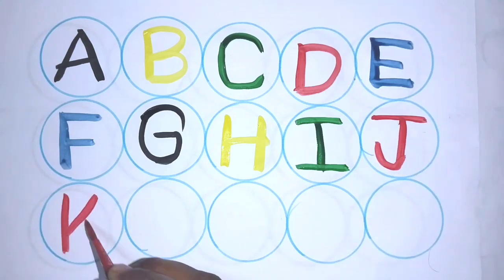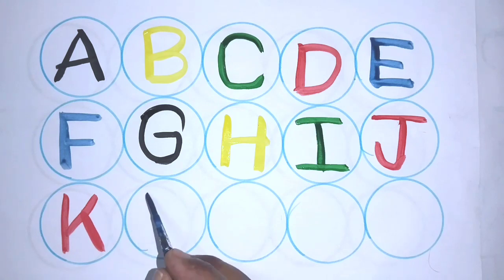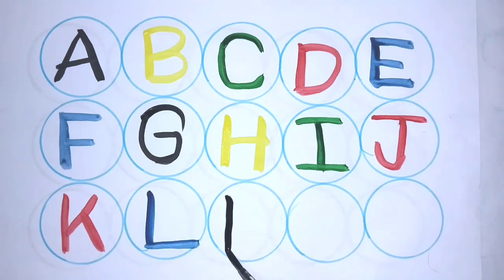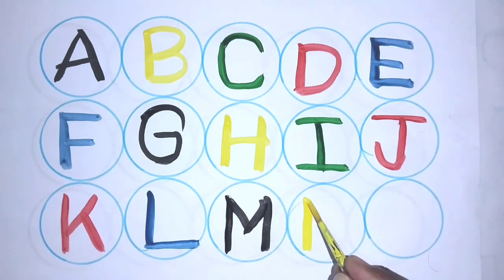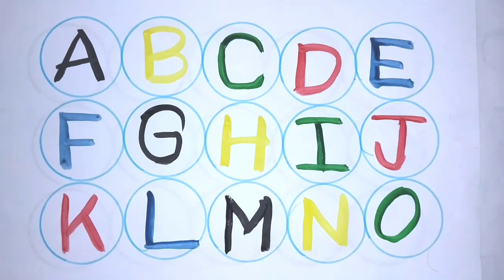K. K for kite. L. L for lemon. M. M for mango. N. N for neck. O. O for onion.